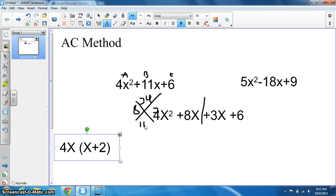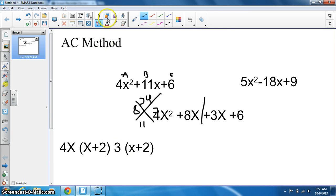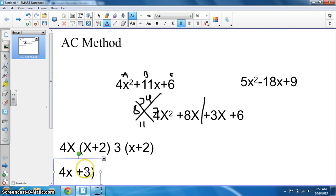For the next part, we take out a 3, getting 3(x + 2). Our two parentheses match up, so we write the problem as (4x + 3)(x + 2). That's our medium problem.